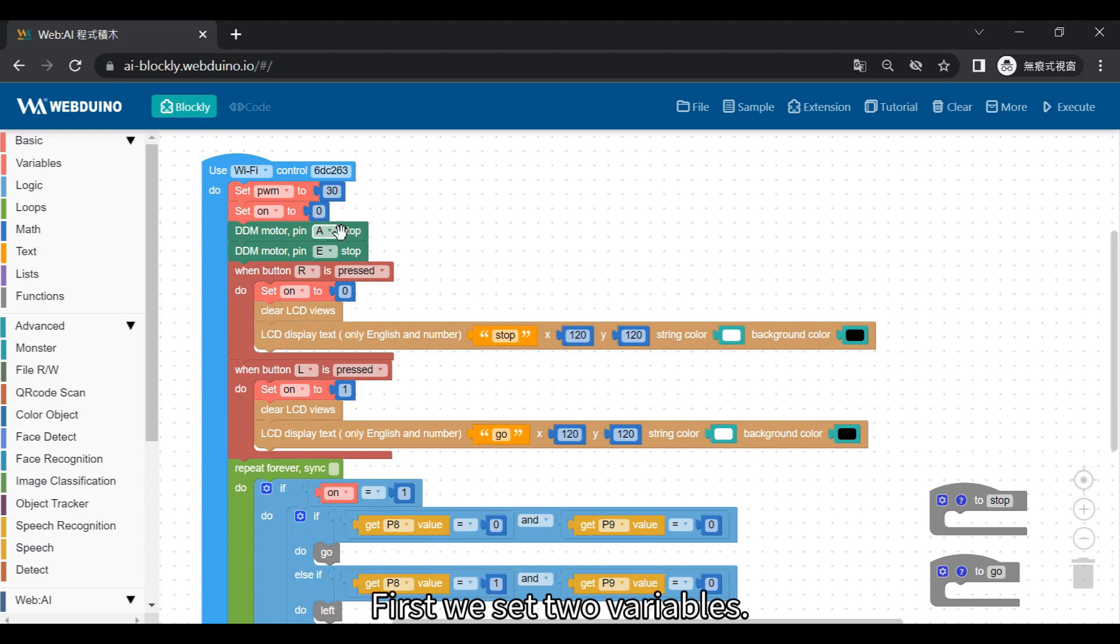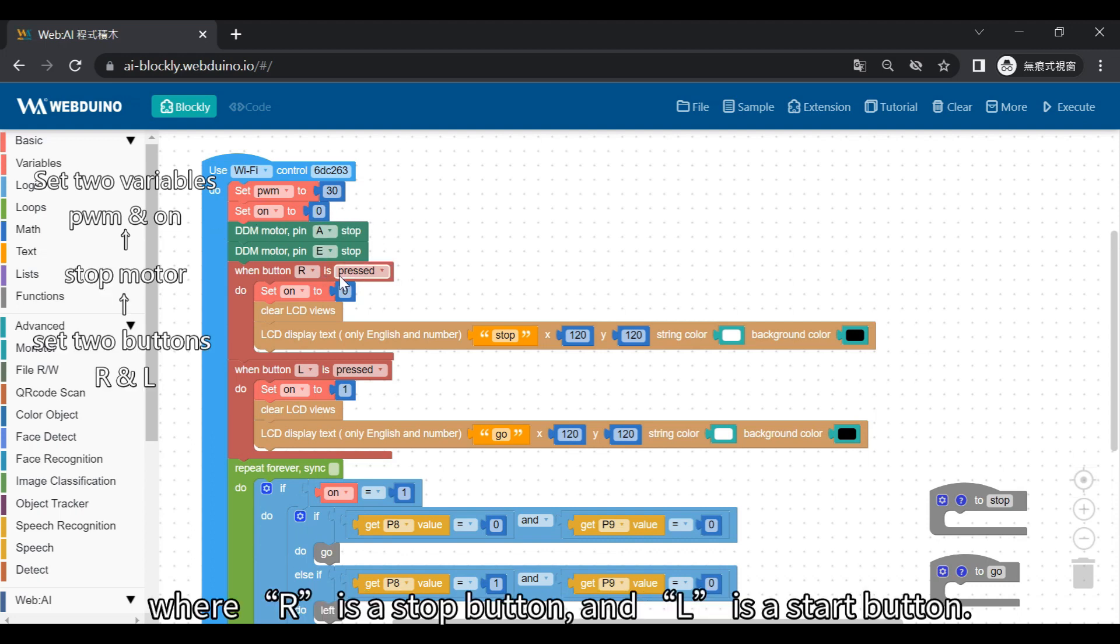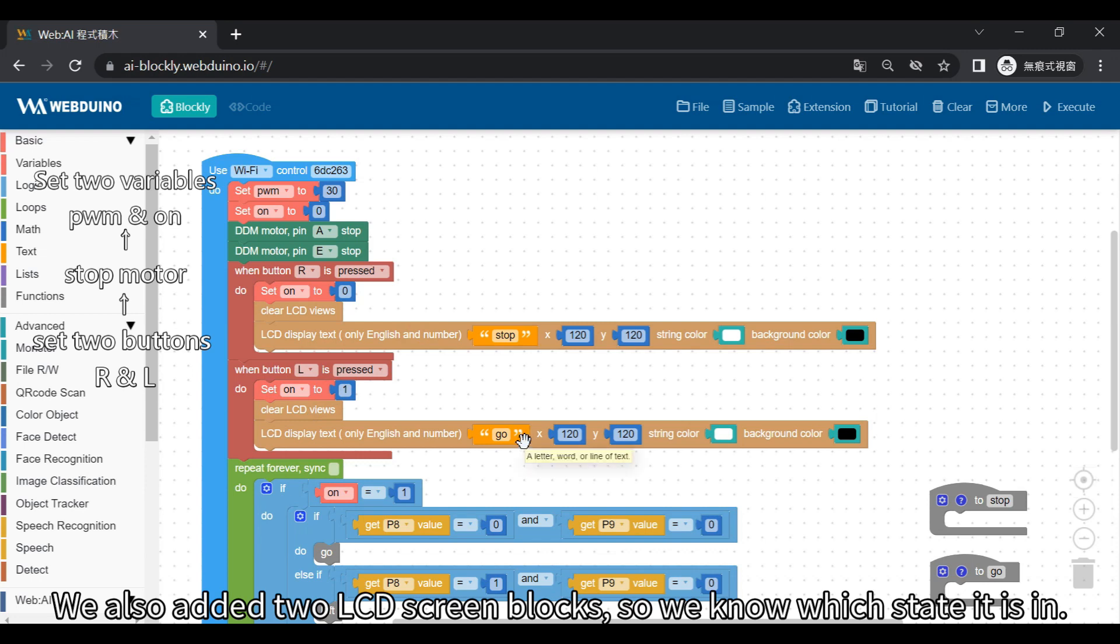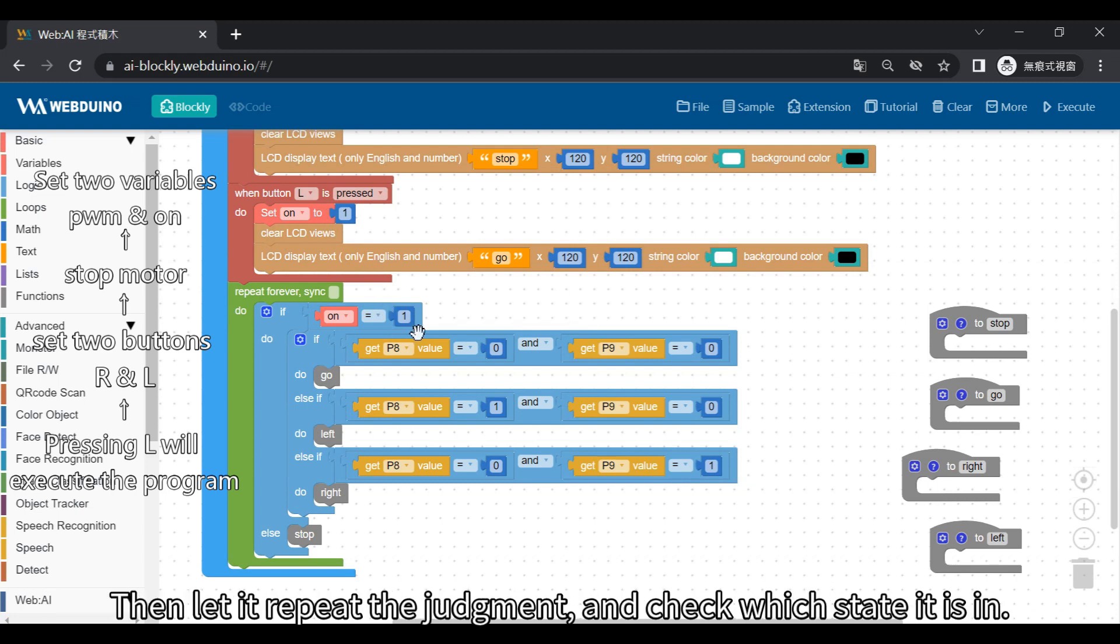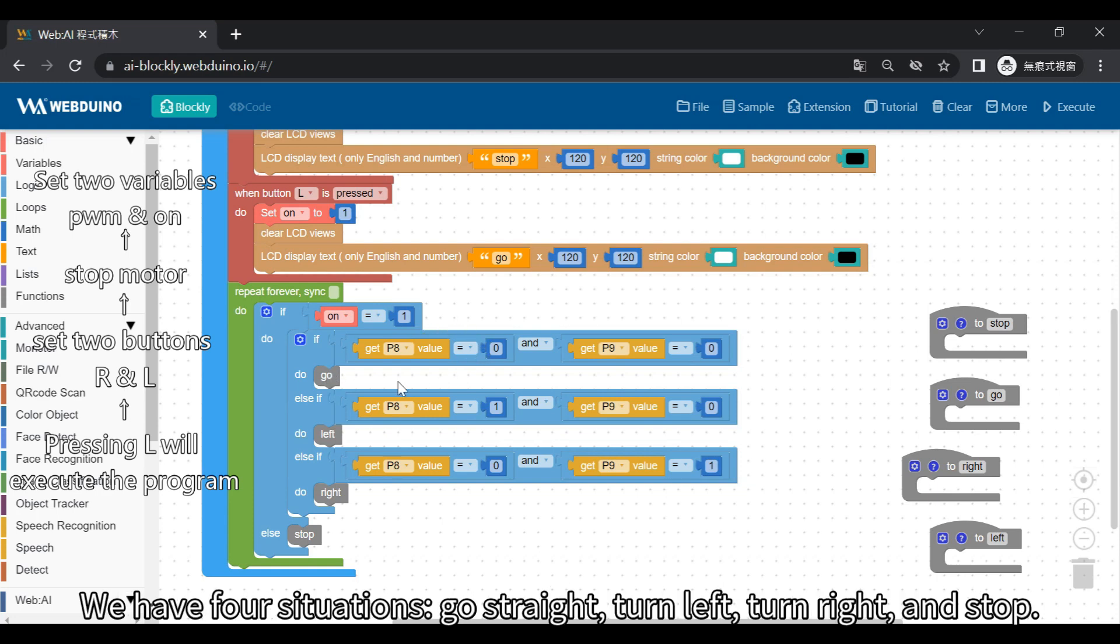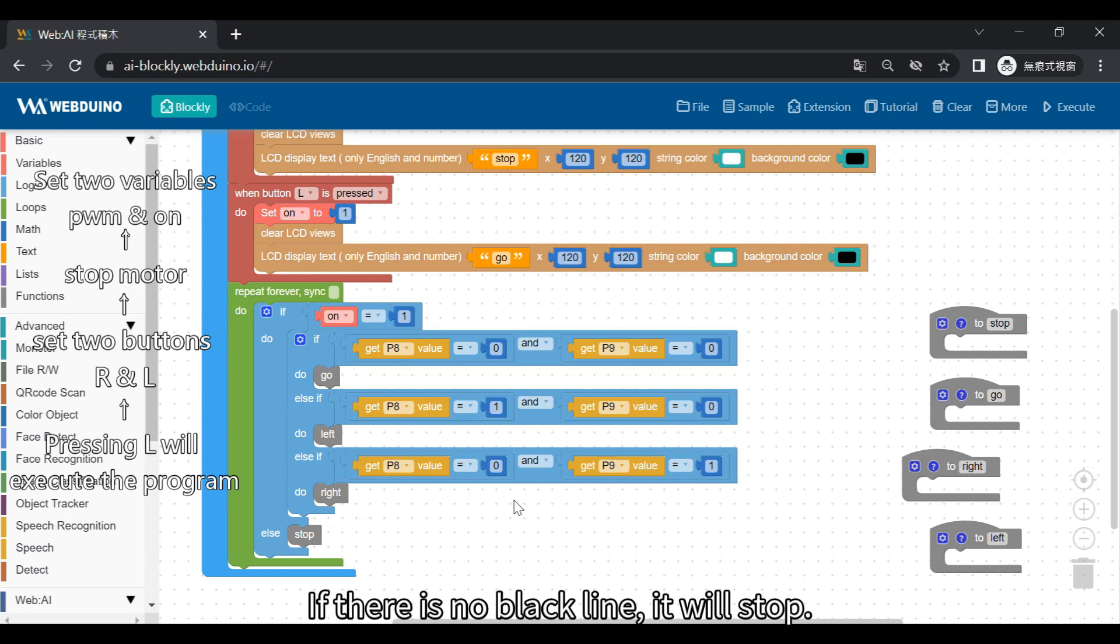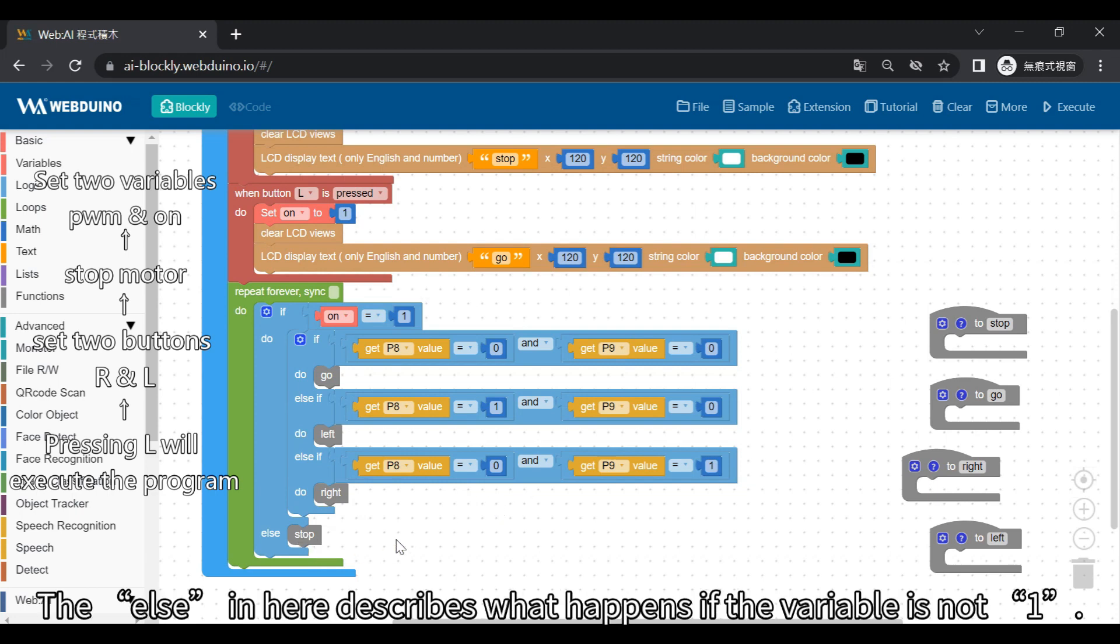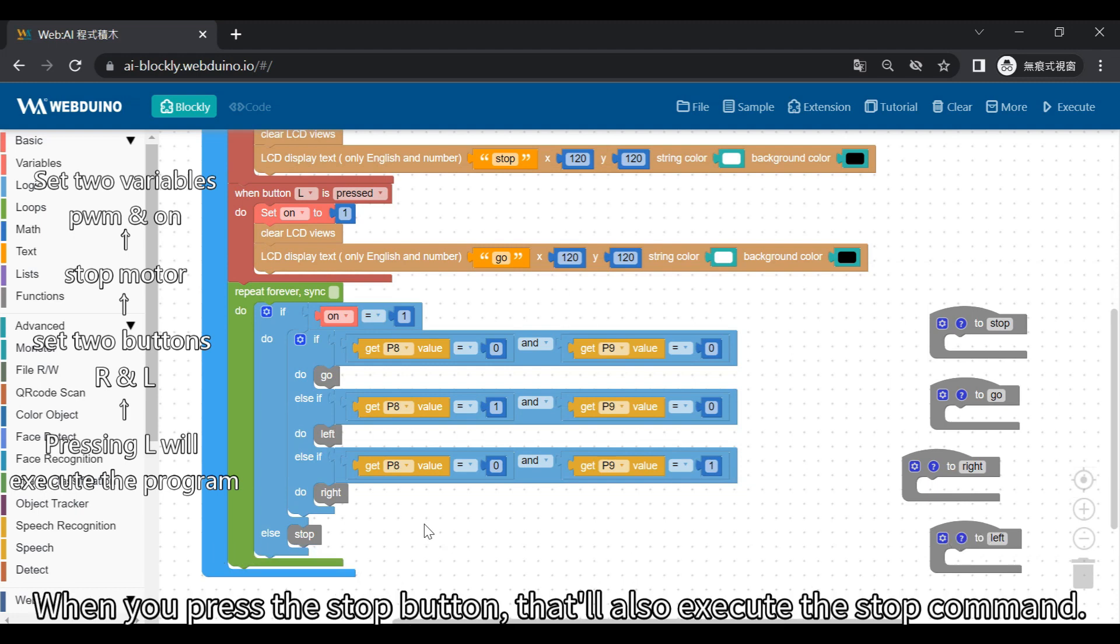First we set two variables. One is power and the other one is a variable. We set the stop motor instruction first. Then we set two buttons. Where R is a stop button, and L is a start button. We also added two LCD screen blocks, so we know which state it is in. Pressing L will change the variable on to 1, executing the program. If variable on is 0, the program will not run. Then let it repeat the judgment and check which state it is in. We have four situations: go straight, turn left, turn right, and stop. These programs will execute depending on what the sensor sees. If there is no black line, it will stop. The ELSE here describes what happens if the variable is not 1. So, there are many situations where the variables will be 0, and this will stop the program. When you press the stop button, that'll also execute the stop command. That's all the parts of our program.